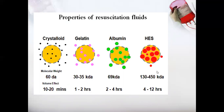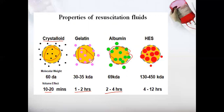A diagram comparing resuscitation properties shows that crystalloids cause a lesser amount of retention in plasma and their effect lasts only 10 to 20 minutes. Gelatin shows a larger amount of fluid resuscitation lasting one to two hours. Albumin resuscitates a greater amount of plasma volume lasting two to four hours. Hetastarch retains the maximum amount and its effect lasts four to twelve hours, making it the best resuscitation fluid among these options.